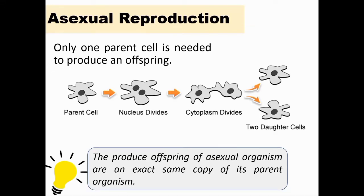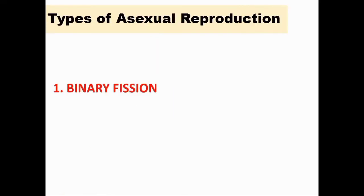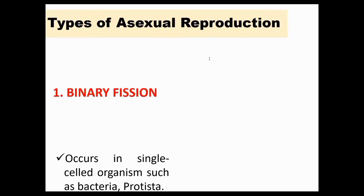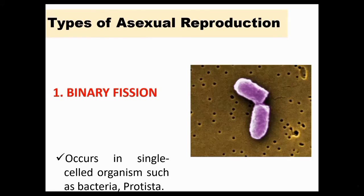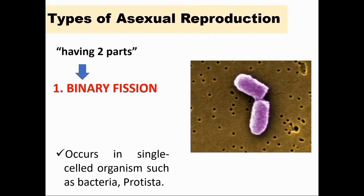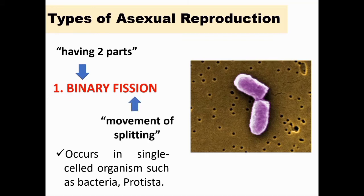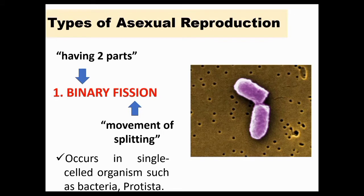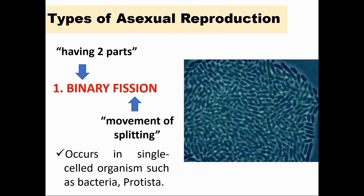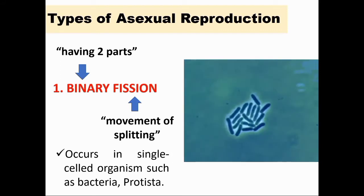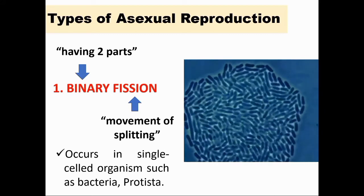There are different types of asexual reproduction. The first one is binary fission. Binary fission occurs in a single-celled organism. It is when a parent cell divides into equal parts to create offspring. This type of reproduction is like cloning. The word binary means having two parts, referring to the new daughter bacteria, while the word fission means the act of splitting — the dividing into two equal parts. In the example video, the microorganisms divide into two equal parts, and the produced offspring are the exact copy of the parent organism.